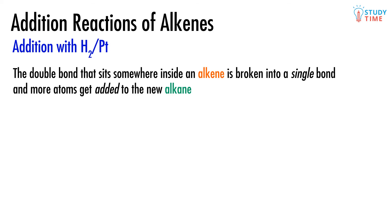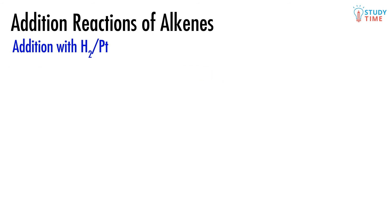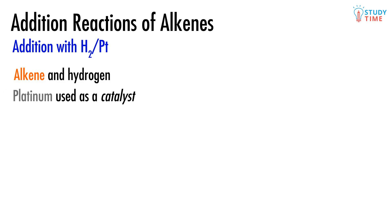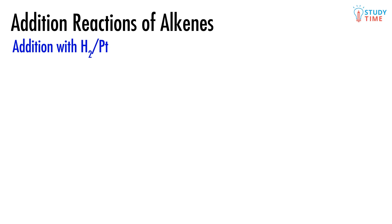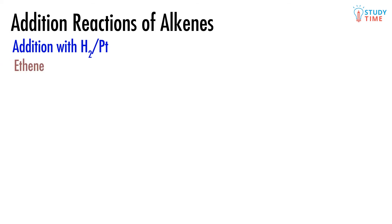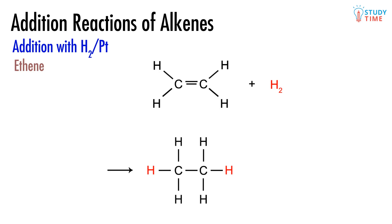What molecule we end up with depends on the reactant used. Beginning with addition of hydrogen to an alkene — we use platinum and heat as catalysts. Since it's the addition of hydrogen, this is called hydrogenation. Adding hydrogen to ethene, the simplest alkene, gives us ethane — the double bond is broken open and two hydrogen atoms are added.